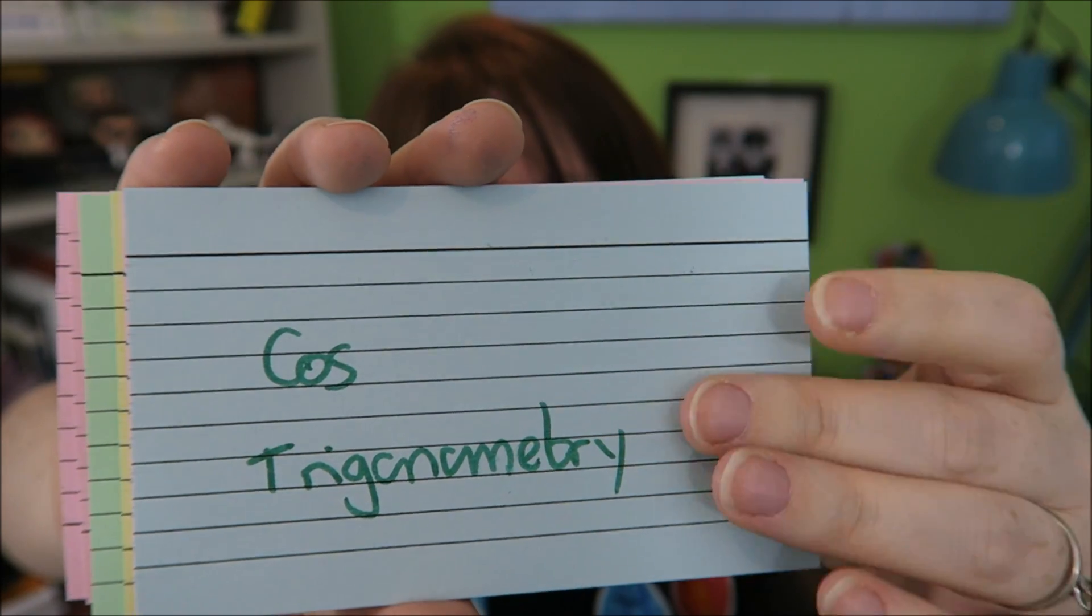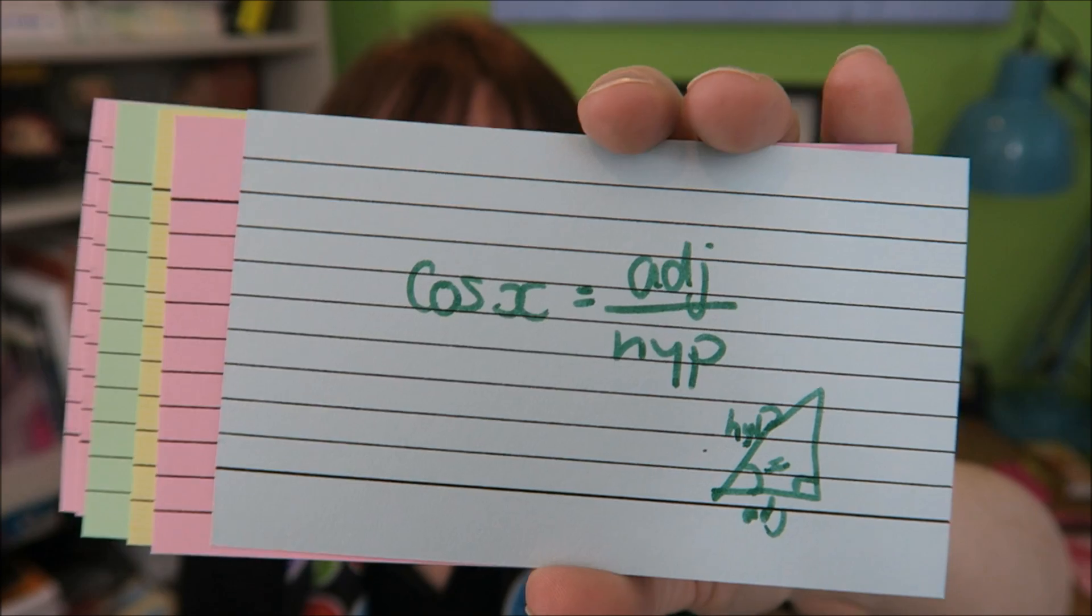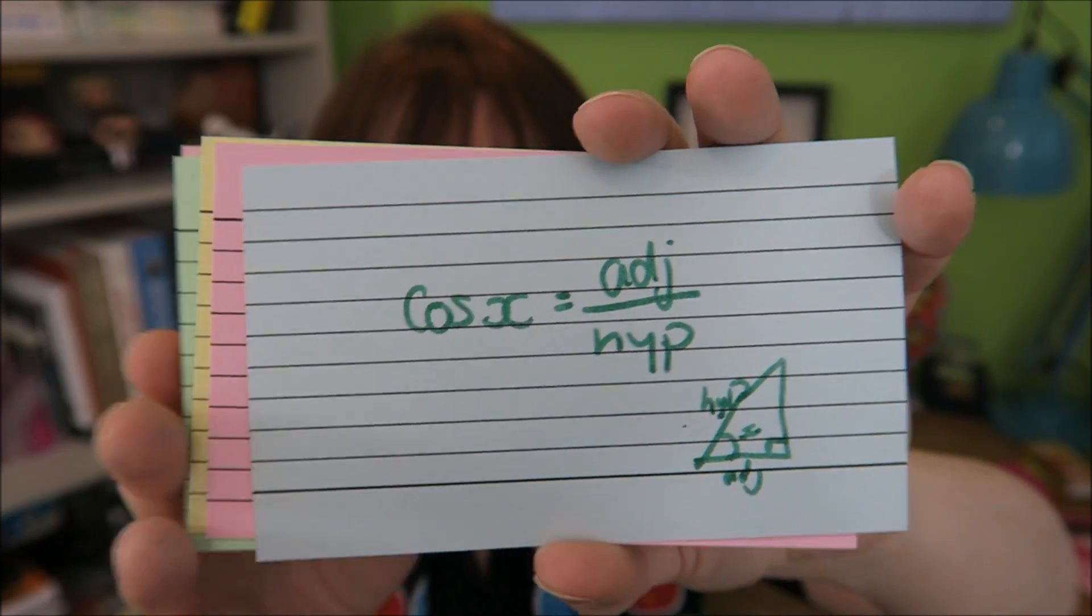Cos trigonometry. Cos X equals the adjacent over the hypotenuse.